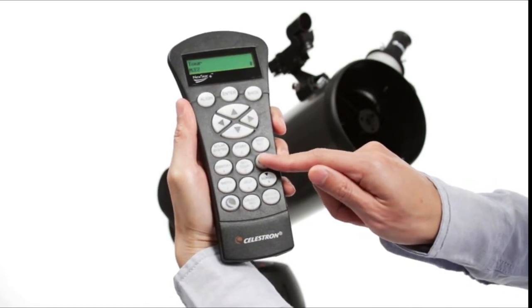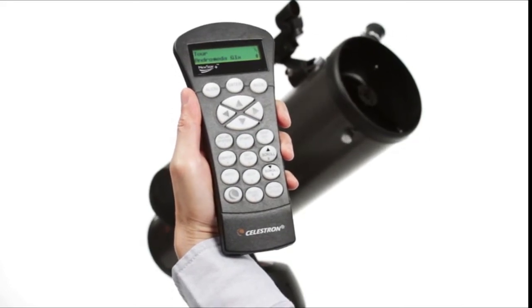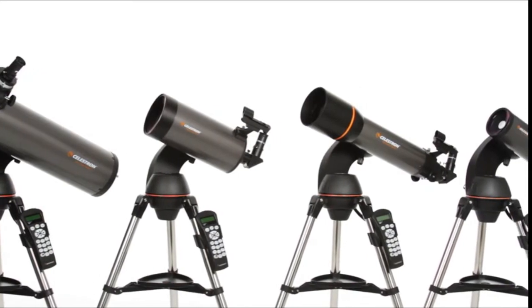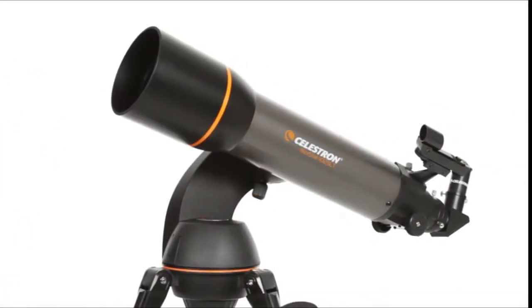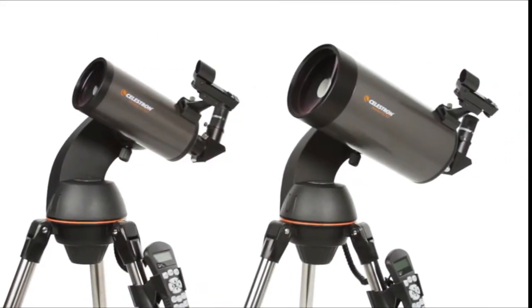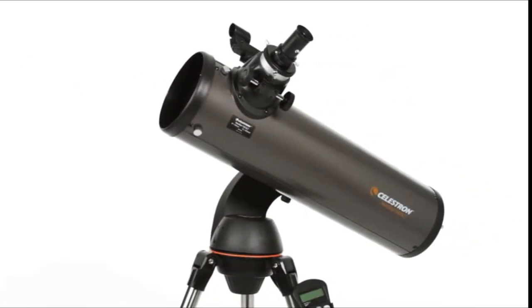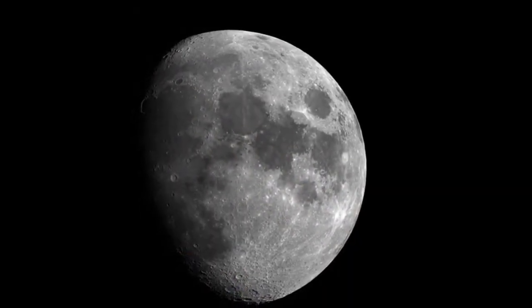It automatically generates a list of the best objects currently visible based on your exact time and location. The SLT family features a variety of optical tube sizes and styles. There's a 102mm refractor, 90mm and 127mm Maksutov-Cassegrain models, and the 130mm Newtonian reflector with maximum light-gathering ability.